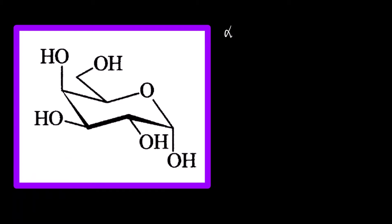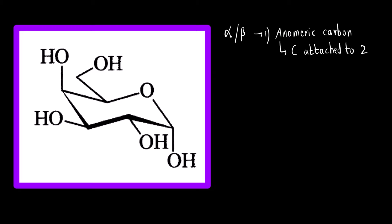First, how do you find out whether an anomer is alpha or beta? The first step is to identify the anomeric carbon. The anomeric carbon is a carbon attached to two oxygen atoms. In this structure, this carbon is the anomeric carbon — you can see it is attached to one oxygen here and another oxygen here.